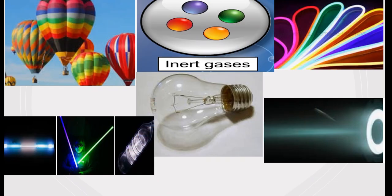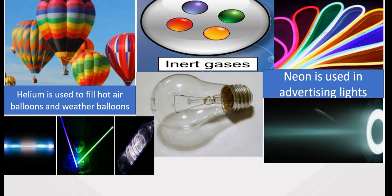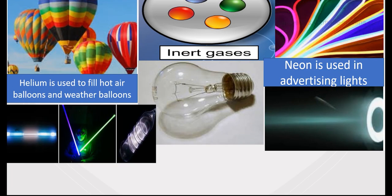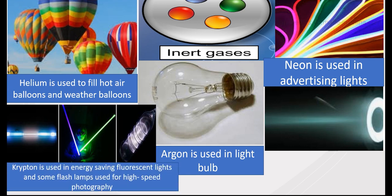Inert gases are also called noble gases and take up about 0.97% of the air. Helium is the second lightest gas in the world and is used to fill hot air balloons and weather balloons. Neon is used in advertising lights. Argon is used in light bulbs. Krypton is used commercially as a filling gas for energy-saving fluorescent lights and in flash lamps used for high-speed photography.